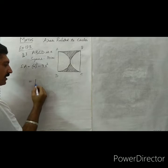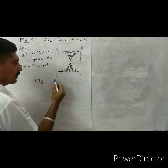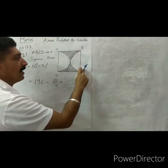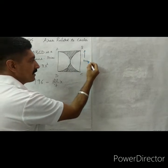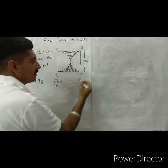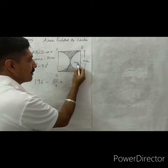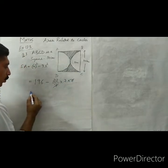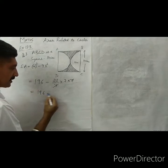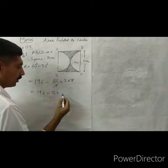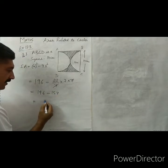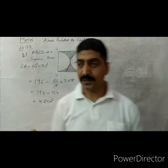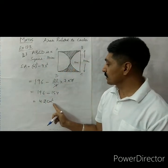Here 14 × 14 = 196. π = 22/7, and the radius is half of diameter 14, so r = 7 centimeter. So πr² = (22/7) × 7 × 7 = 154. Therefore shaded area = 196 − 154 = 42 centimeter square.